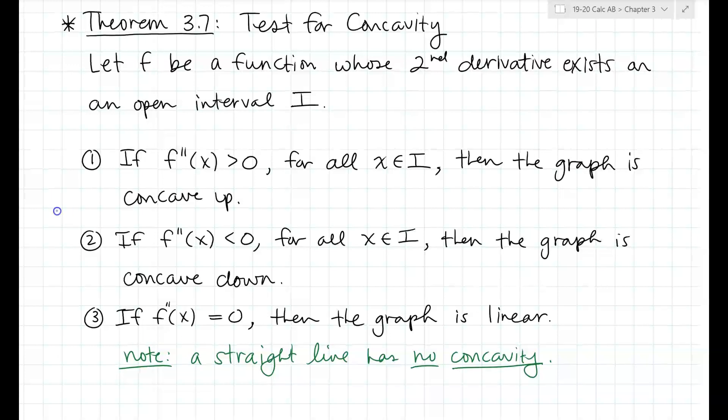An easy way to put this in fewer words: you're going to take two derivatives, then make a sign graph for the second derivative. If the values you plug in come out positive, it's concave up. If they're negative, it's concave down. If it's zero, the function is linear.